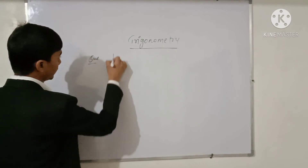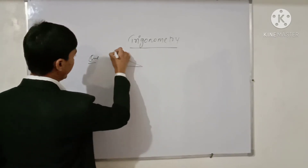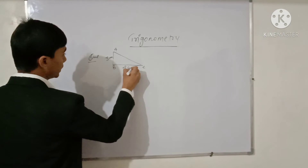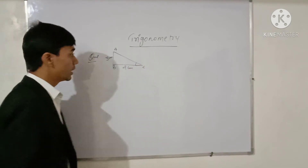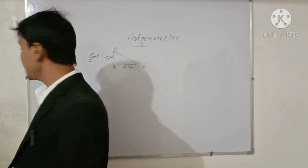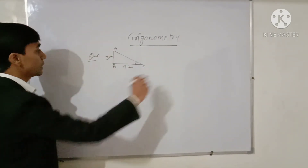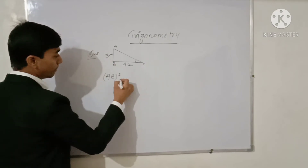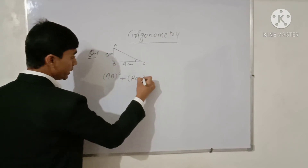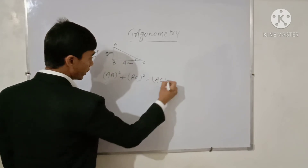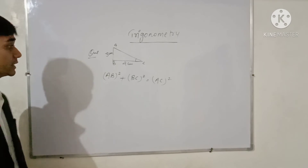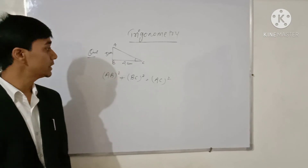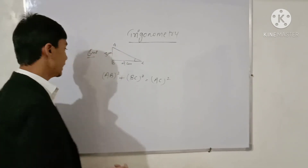Suppose we are given a triangle ABC in which AB equals 3 cm, BC equals 4 cm, and we have to calculate angle C. We have already discussed the Pythagoras theorem: the square of the perpendicular (AB) plus the square of the base (BC) equals the square of the hypotenuse (AC). First, we will calculate side AC and then angles A and C.